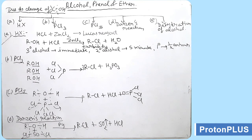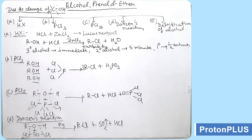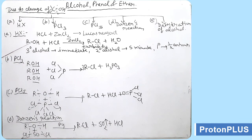First, we will take reaction with HX. We take HCl and ZnCl2, known as Lucas reagent. It is the distinguishing test for 1°, 2°, and 3° alcohols. ROH reacts with HCl in presence of ZnCl2 catalyst. The product formed is RCl plus H2O. There will be turbidity due to the alkyl chloride formed.